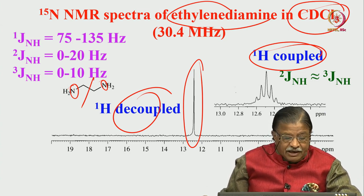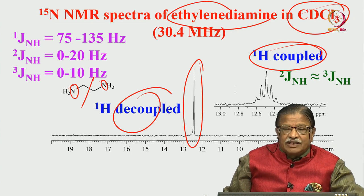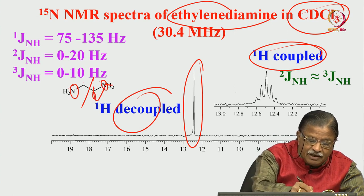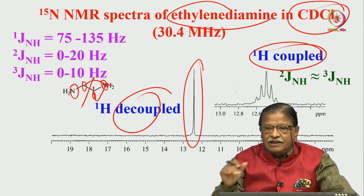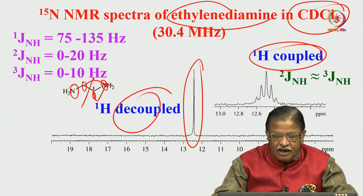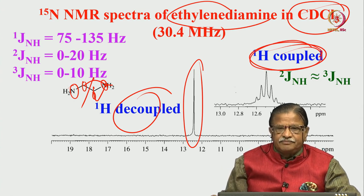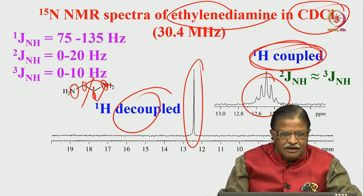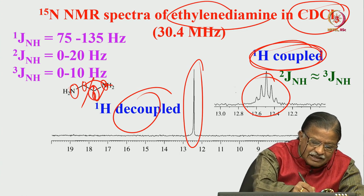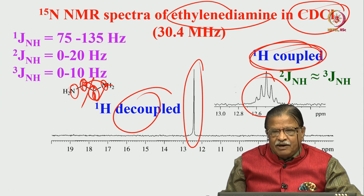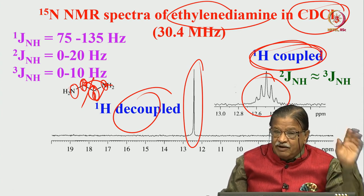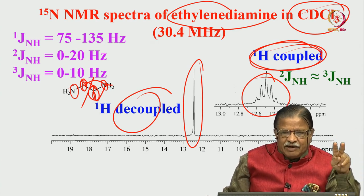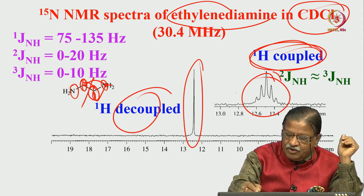If you look for the couplings in ethylene diamine, you can have a one-bond proton coupling, a two-bond coupling through CH2, and a three-bond coupling — three different couplings in total. The proton-coupled spectrum shows a quintet pattern. This can happen only when the two-bond and three-bond couplings are approximately equal, making a triplet-of-triplets where lines overlap, giving a quintet.